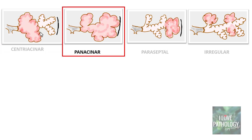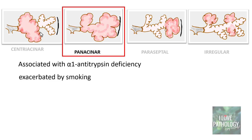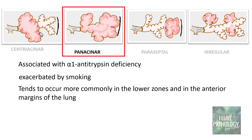Panacinar emphysema is associated with alpha-1 antitrypsin deficiency and exacerbated by smoking. These tend to occur more commonly in the lower zones than the upper, usually in the lower zones and anterior margins of the lung, and are most severe at the base of the lungs.